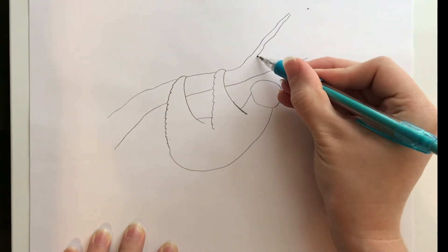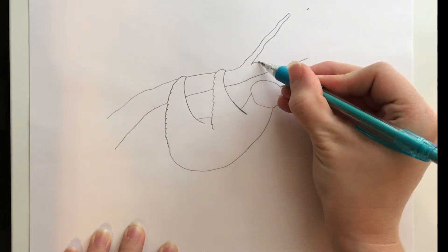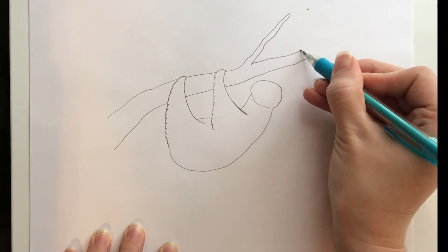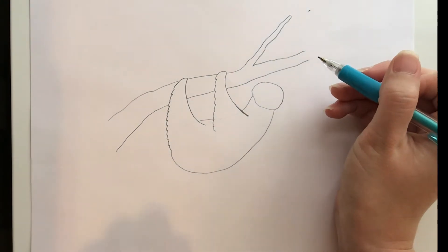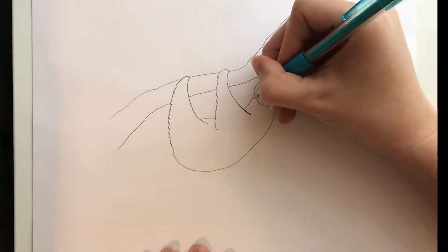If you'll notice my lines aren't very straight. Trees have lots of little knots and wiggly spots and it's totally okay for your tree that you're drawing to have some wiggles.